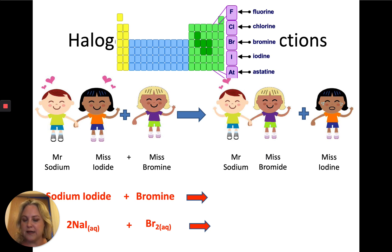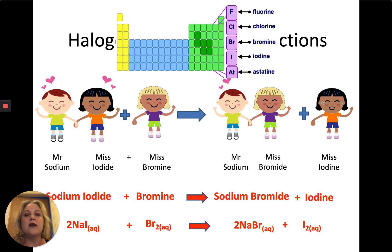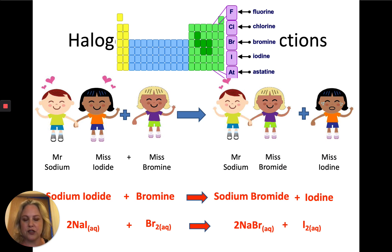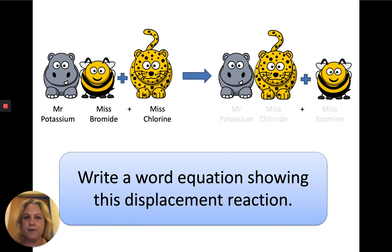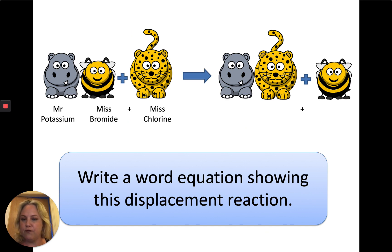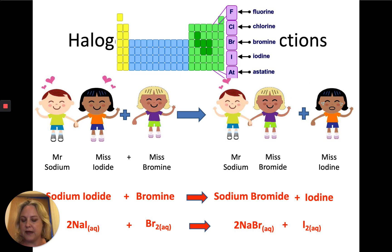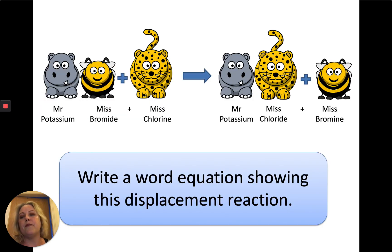So: sodium iodide plus bromine, arrow to show the reaction, makes sodium bromide plus iodine. Iodine is now on its own and sodium and bromide have made a chemical bond. Here are some examples — pause the video and see if you can write a word equation for this reaction here.